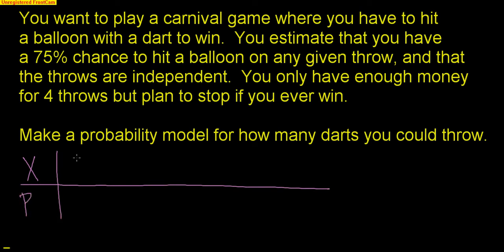I could throw one dart. For me to throw one dart and be completely done, that means I must have won — I must have thrown that dart and hit the balloon. That's a 75% chance that that happens. If I win, I'm done, I walk away.